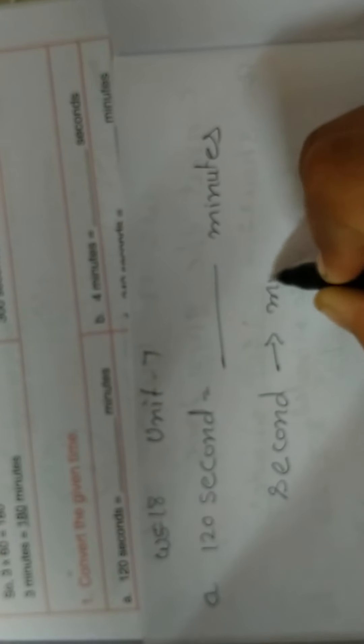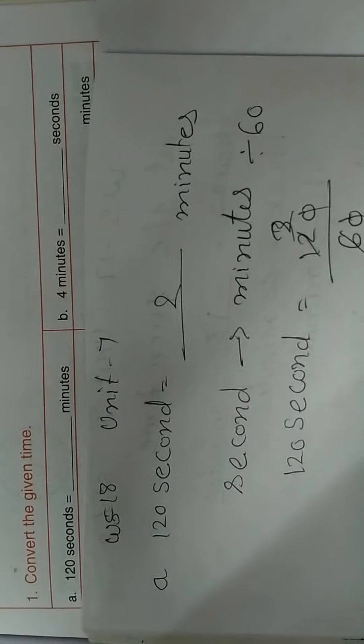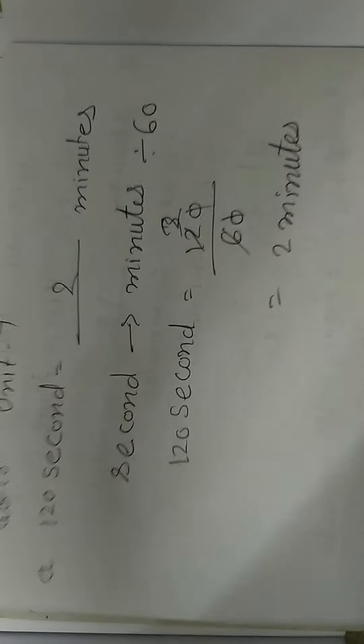Now we have to convert seconds into minutes — divide by 60. So 120 seconds is equal to 120 divided by 60, which equals 2. The answer is 2 minutes. Write 2 here. Now locate this and write it down in your notebook.